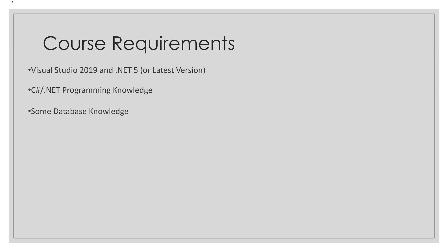Now, the requirements for this course include Visual Studio 2019 and .NET 5, or the latest version at the time you are doing this course. Everything we're going to be doing is future proof and these principles can be transferred to the latest versions with no problem. To get the most out of this course, I do recommend that you have some amount of C# and .NET programming knowledge as well as database development knowledge. Either way, I will make the content very beginner friendly and you should have absolutely no problem following along.